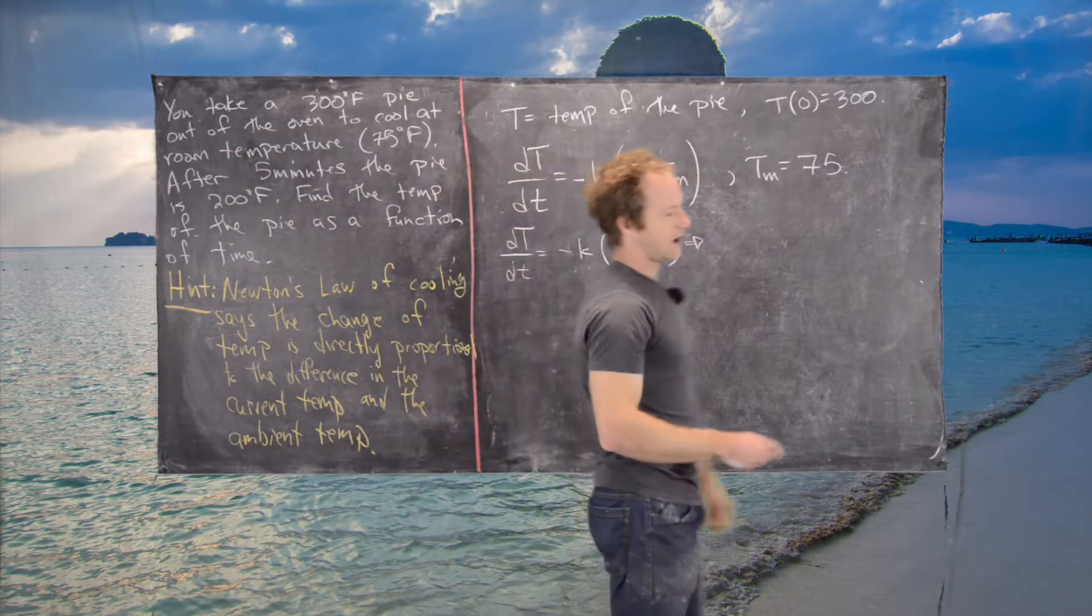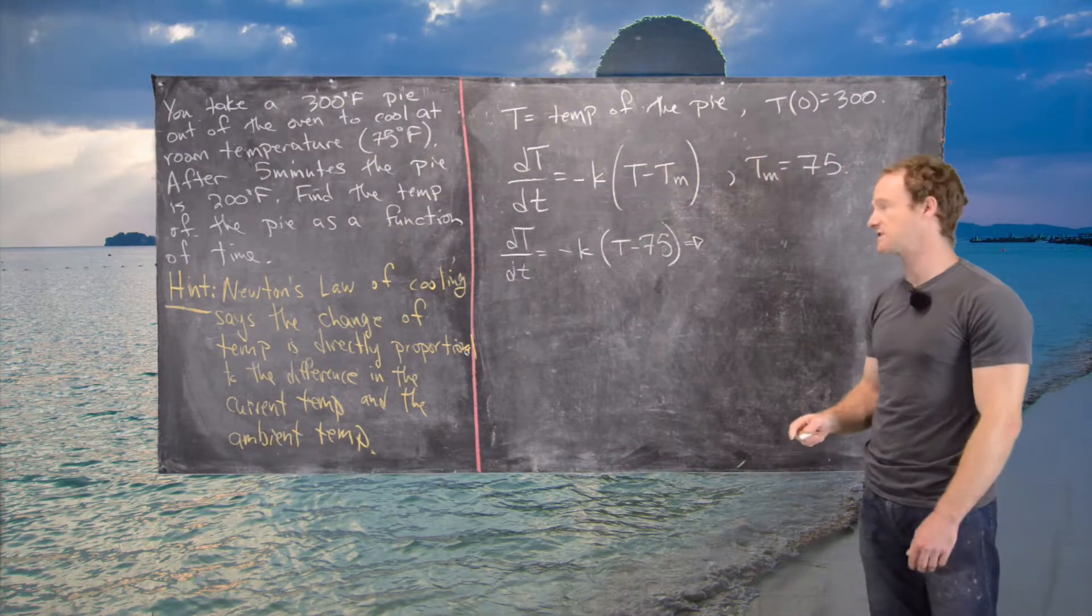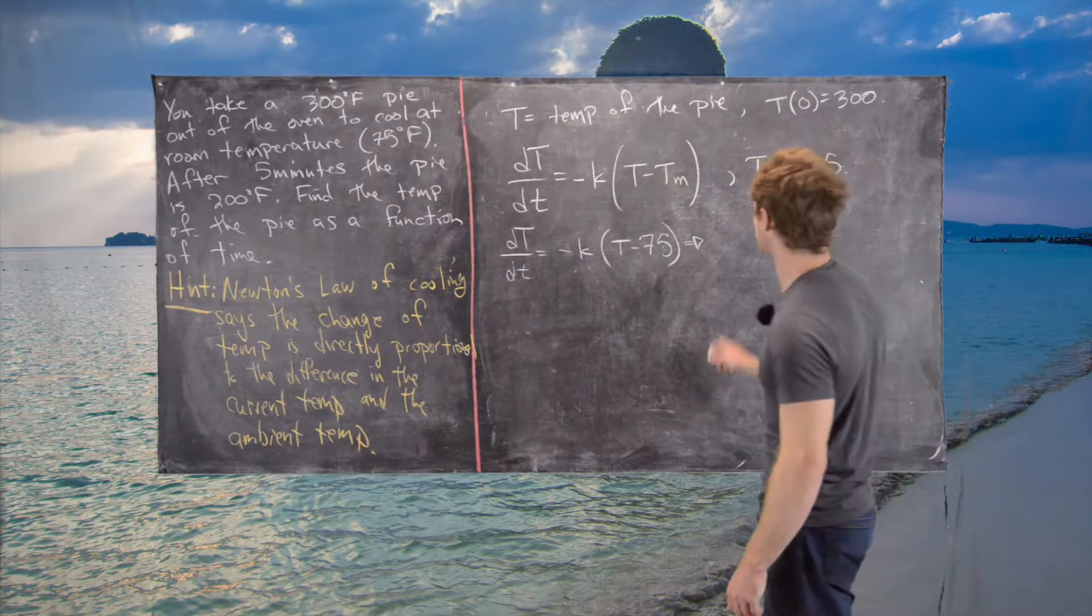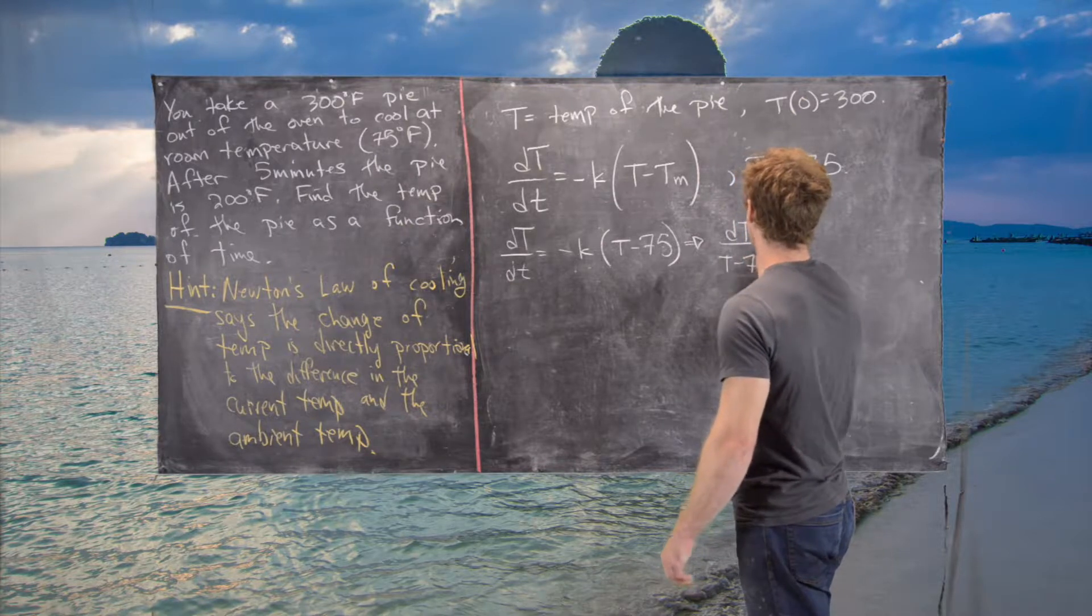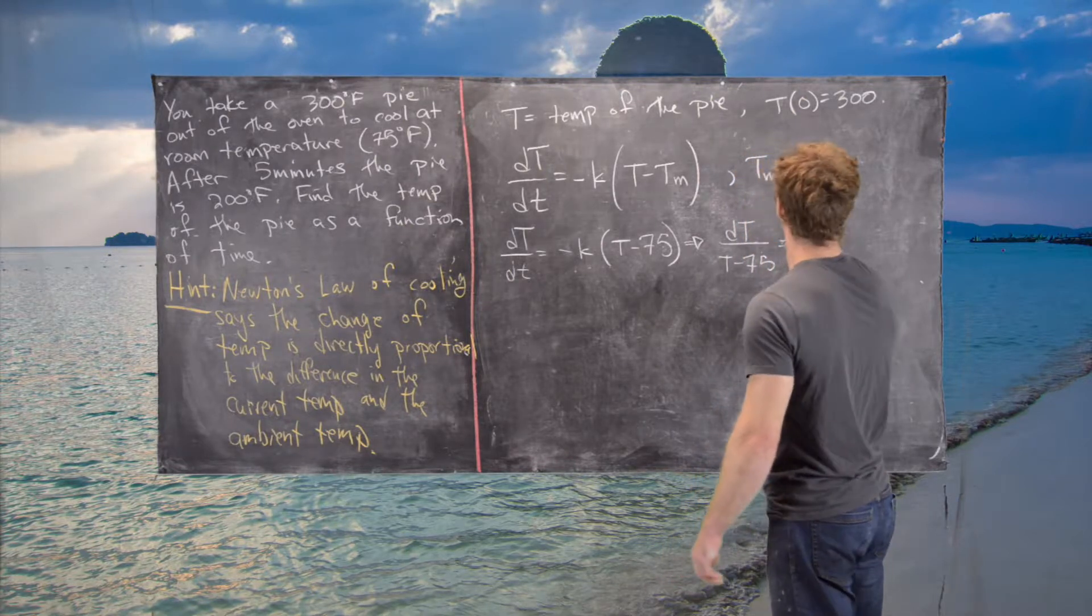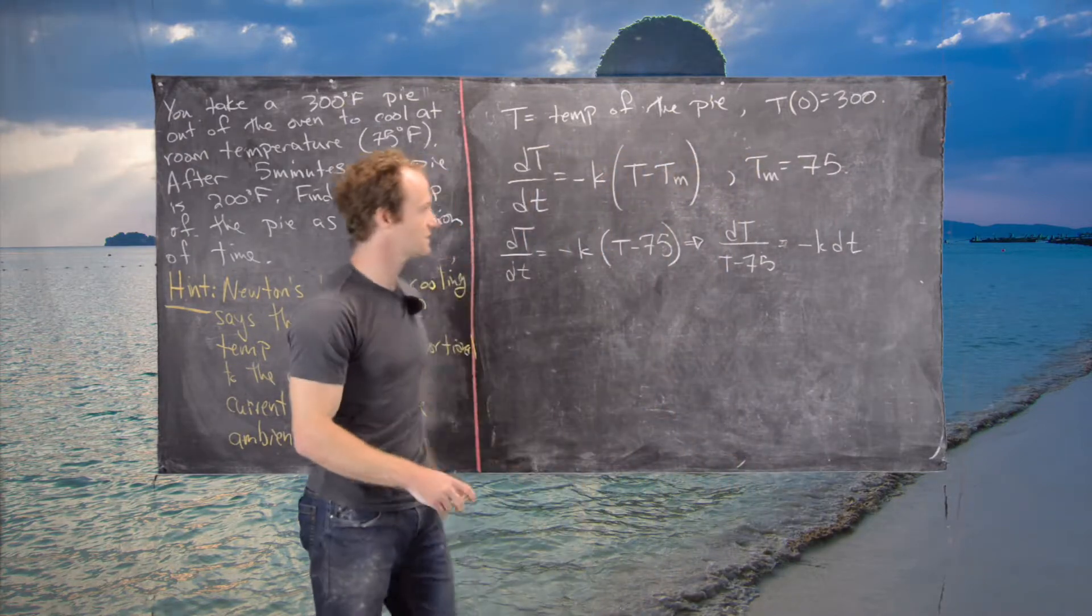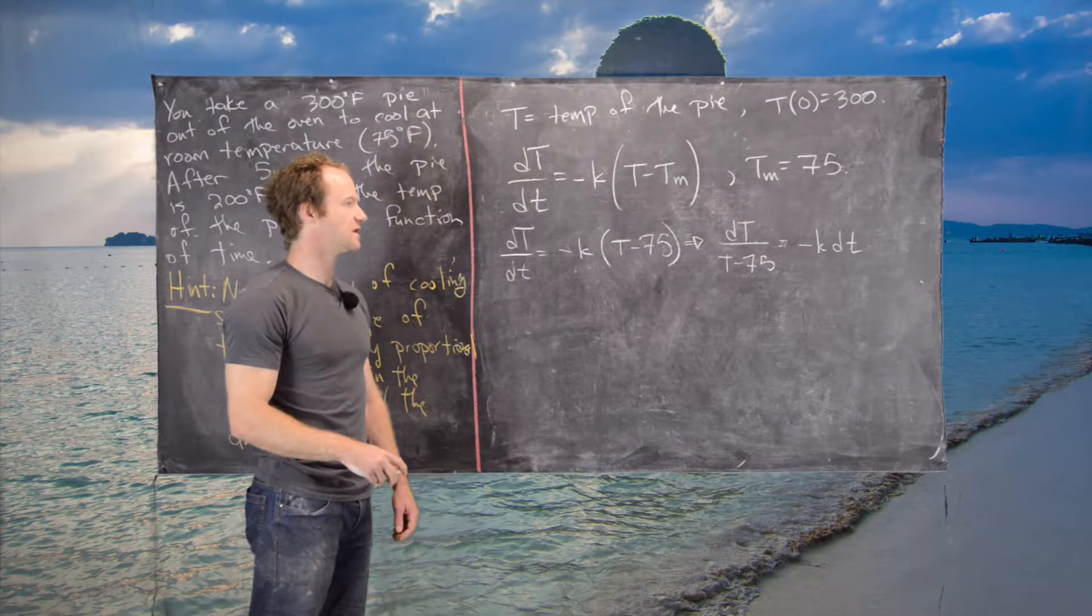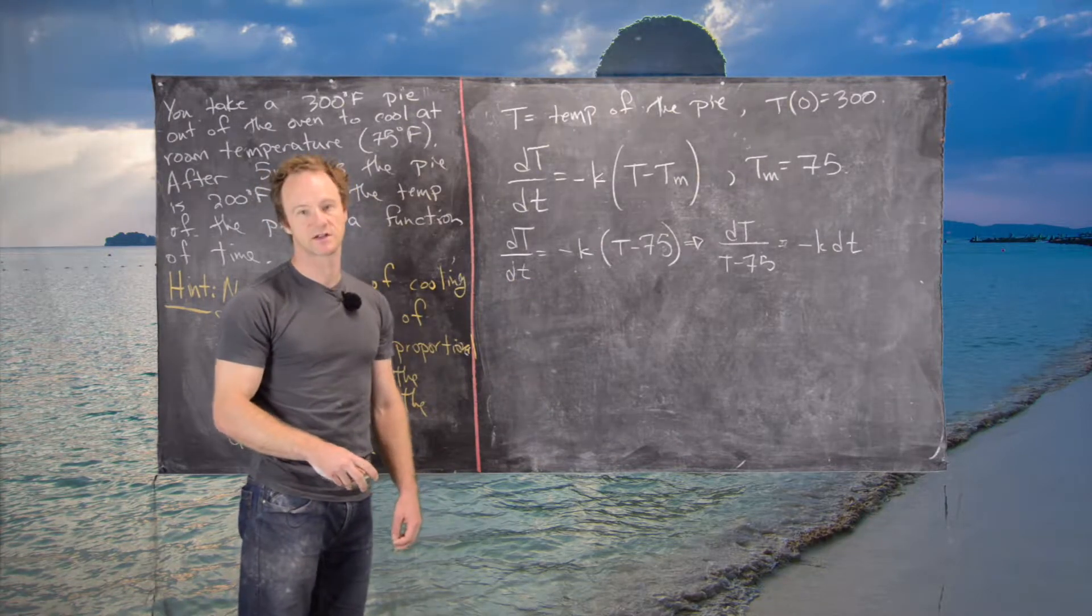There's no explicit dependence on t, so this is an autonomous differential equation. We have dT/(T - 75) = -K dt. Now we can take the anti-derivative of both sides: the left-hand side with respect to T, the right-hand side with respect to t.